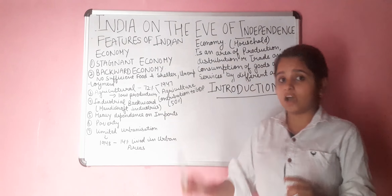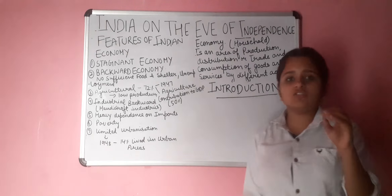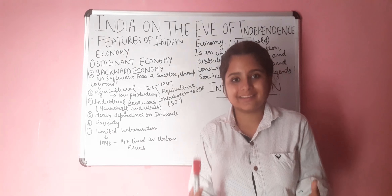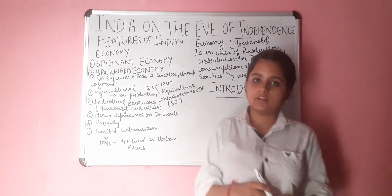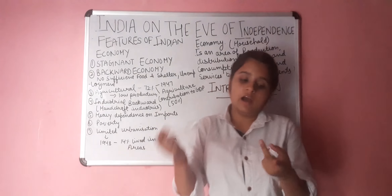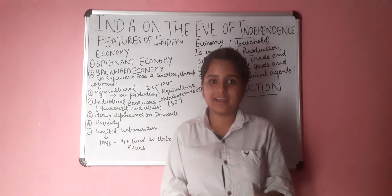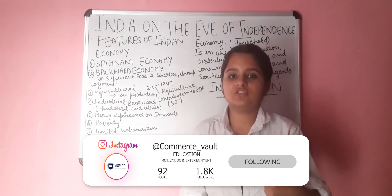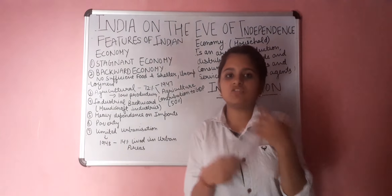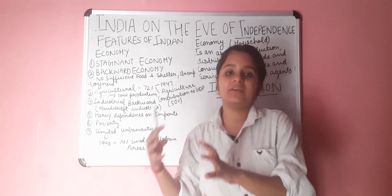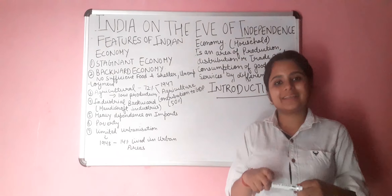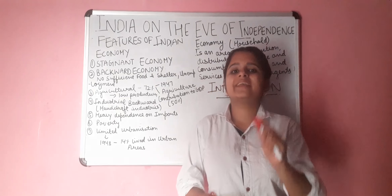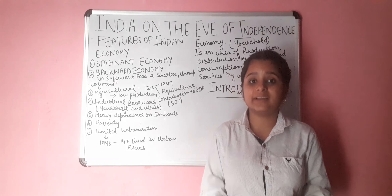We are here studying the chapter India on the Eve of Independence. In this chapter, we will study that after independence, that is 1947, how did our Indian economy go. We will study things like how did our agriculture sector, our industry sector, our foreign trade, our demographic conditions, and our infrastructure develop — all of these one by one after independence in 1947.